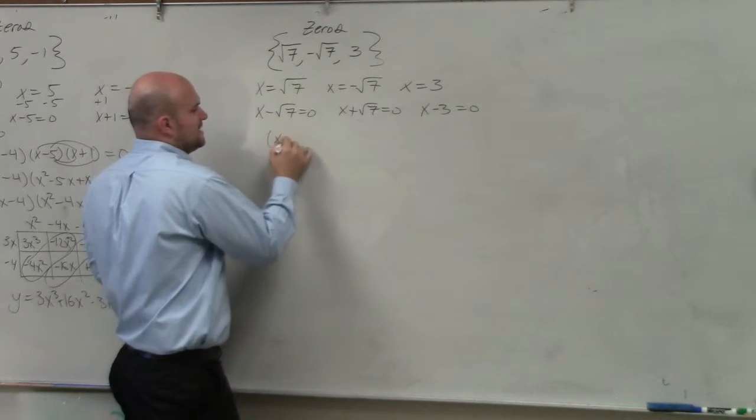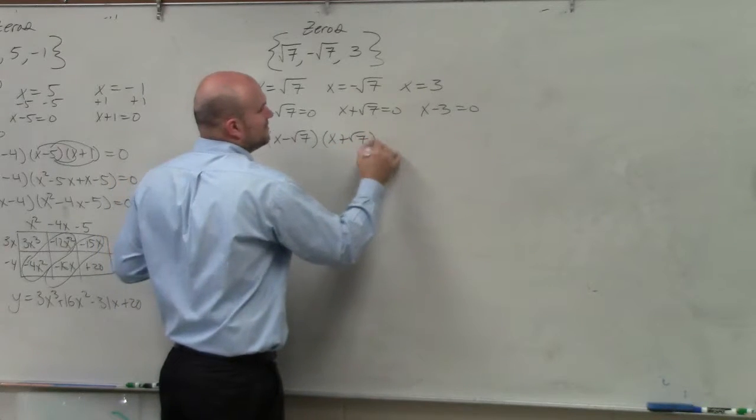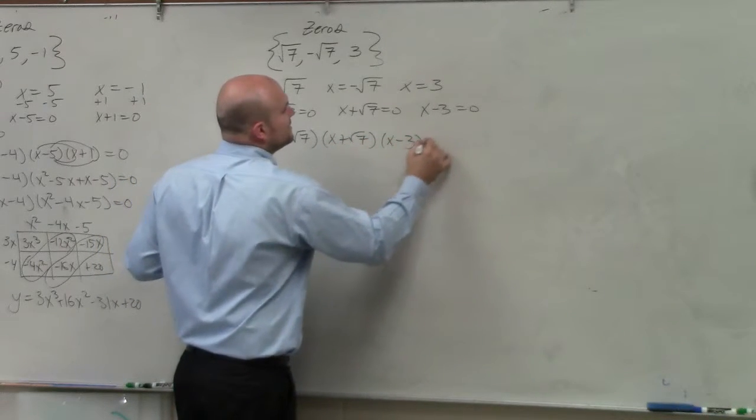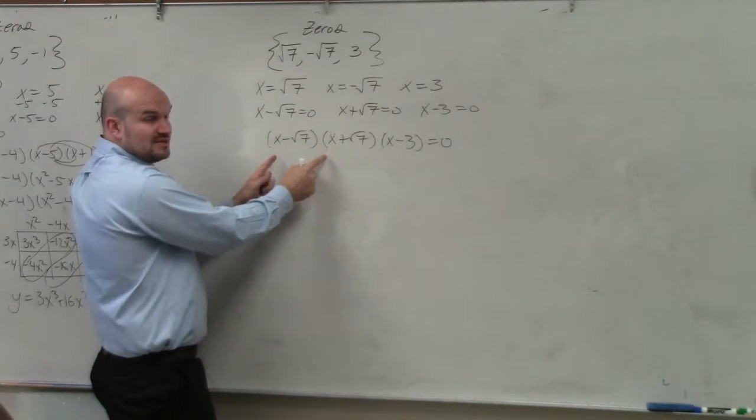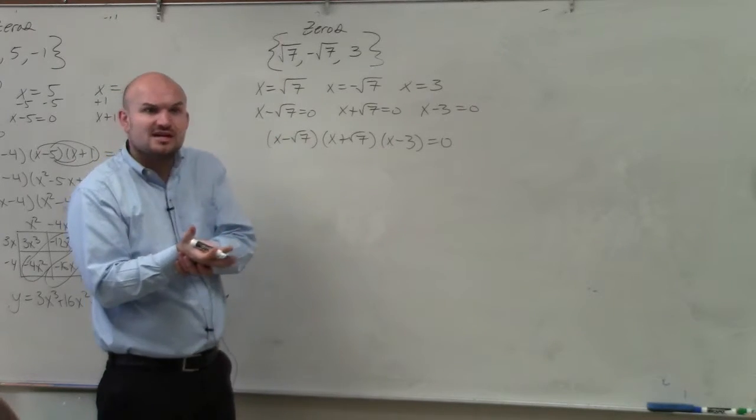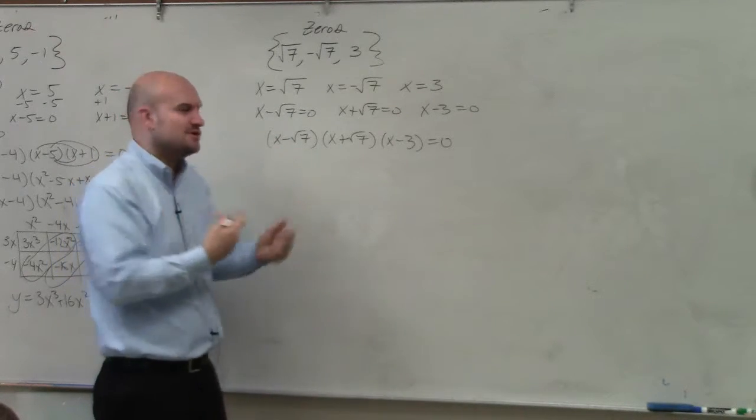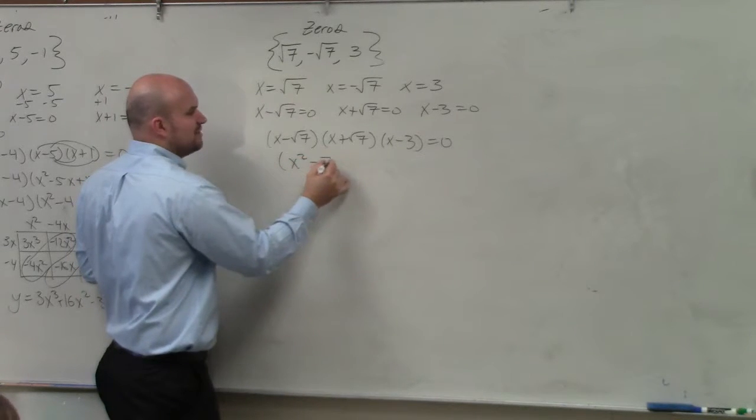Then you can multiply these: x minus square root of 7 times x plus the square root of 7 times x minus 3 equals 0. What you guys notice, though, is this is the difference of two squares. First two terms are the same, last two terms are the same. One's minus, one's plus. What does that tell us? That tells us we just need to multiply the first and last two terms, because the middle terms will divide out. So I get x squared minus 7.